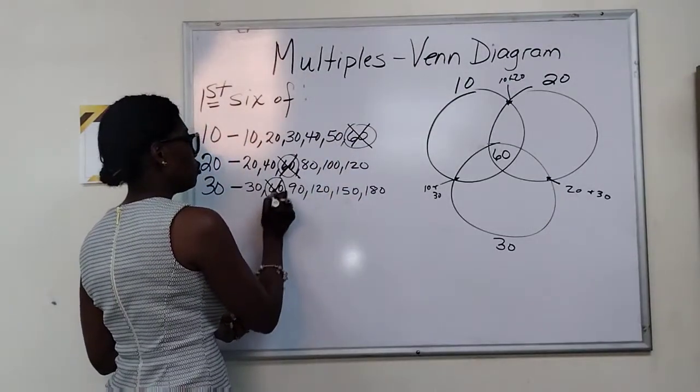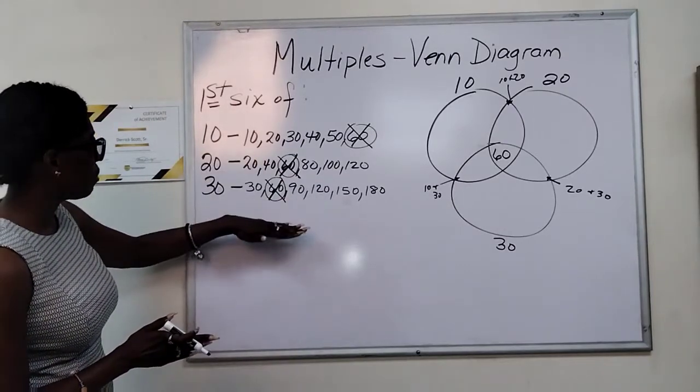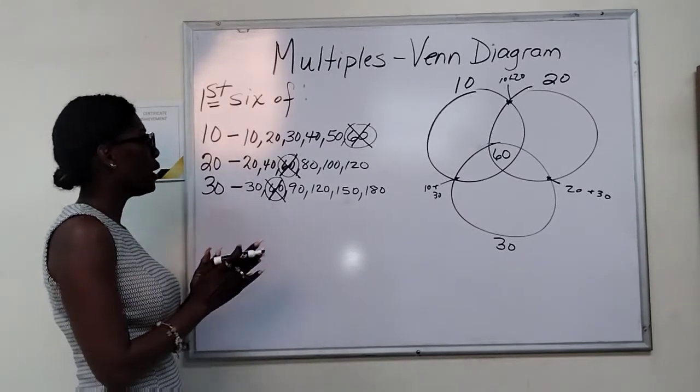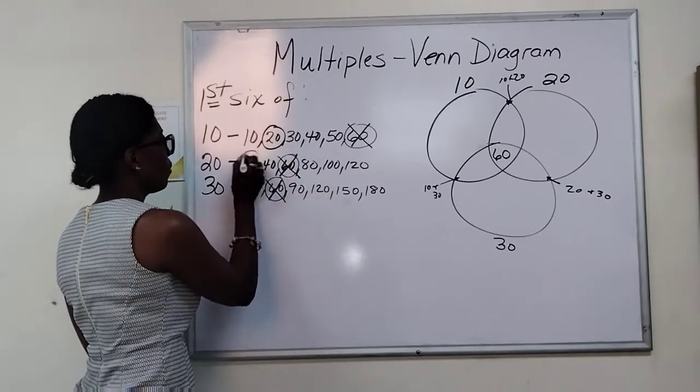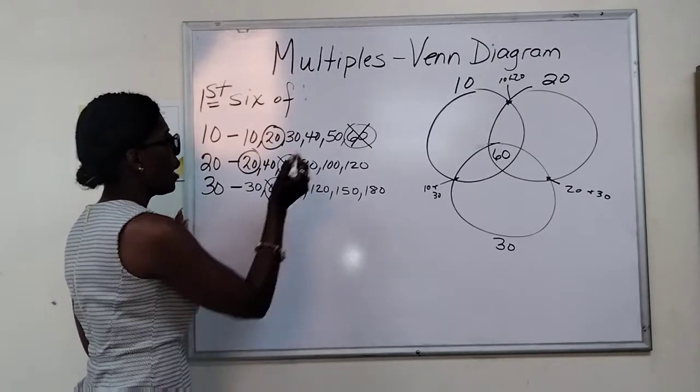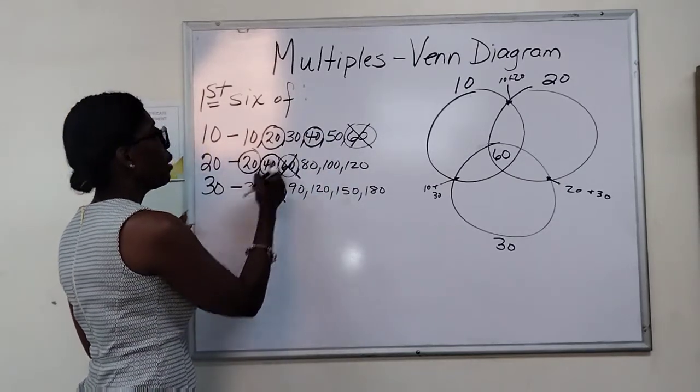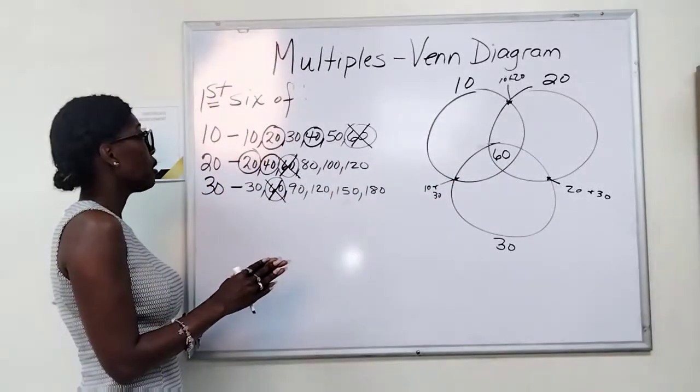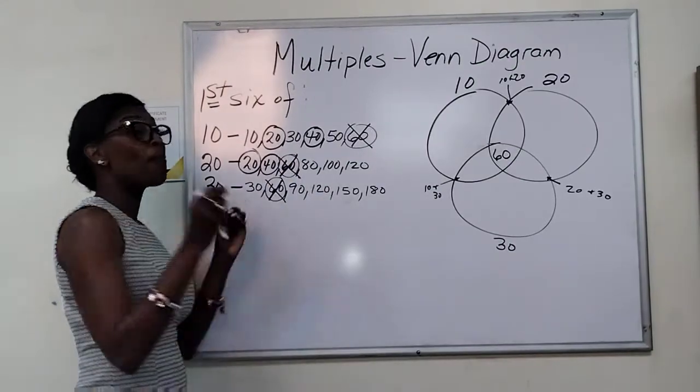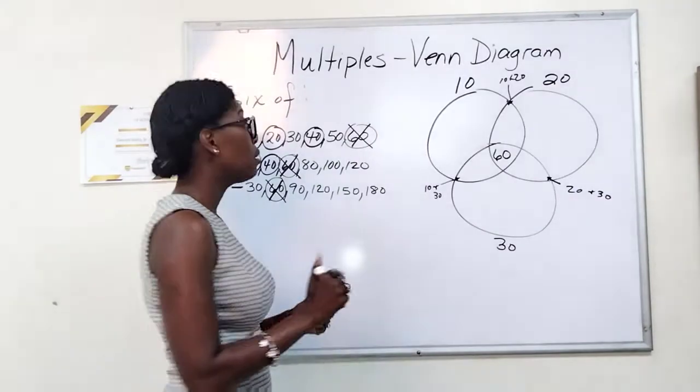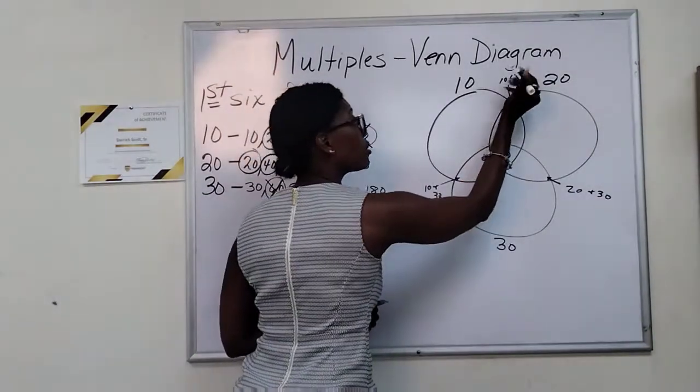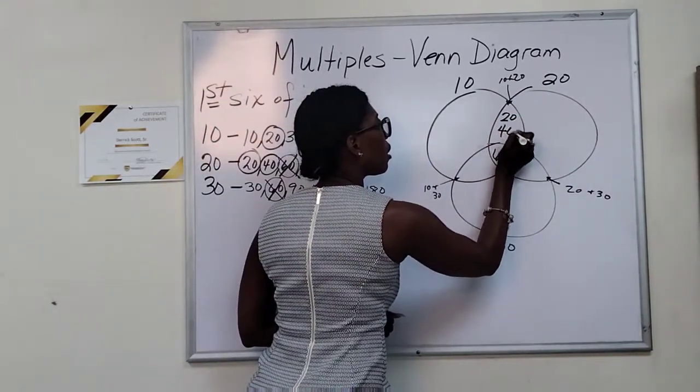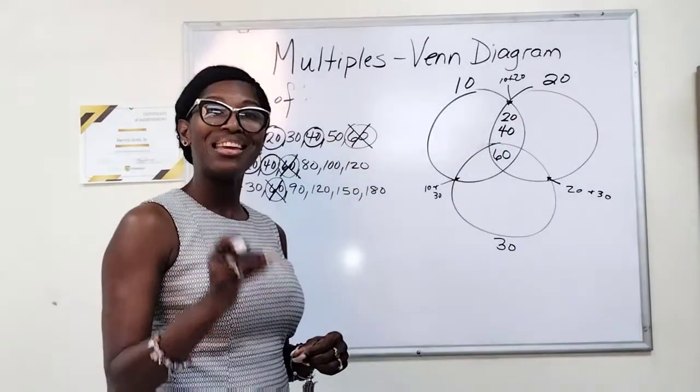Put it here. There's no other multiples that 10, 20 and 30 all have in common. So that's done. Let's go with 10 and 20. We have 20. We have 40. Yes, we have 60, but it's already there. So we're not using that again. So 20 and 40 are multiples of both 10 and 20. We're going to put it right here in that region because that's for 10 and 20.